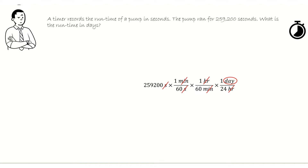Therefore, 259,200 divided by 60, divided by 60 again, divided by 24, gives us 3 days. A pump that runs for 259,200 seconds is the same as 3 days.